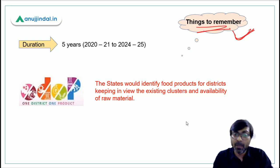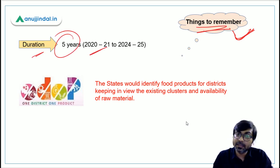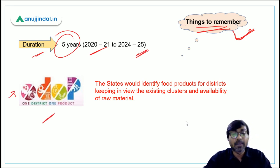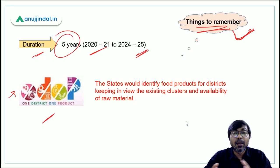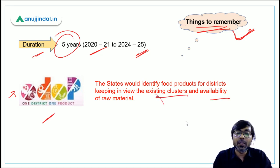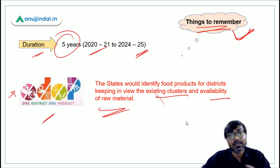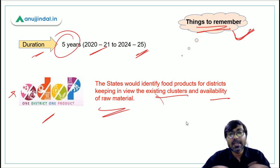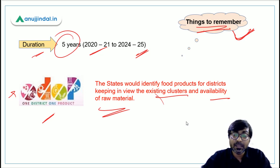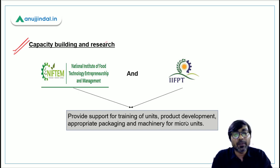The scheme duration is five years, from Financial Year 2021 to Financial Year 2025. It follows the One District One Product approach, under which respective states identify food products for their districts based on existing clusters and raw material availability. For example, in Bihar, where rice production is high, a district with maximum rice output would be identified under this approach.